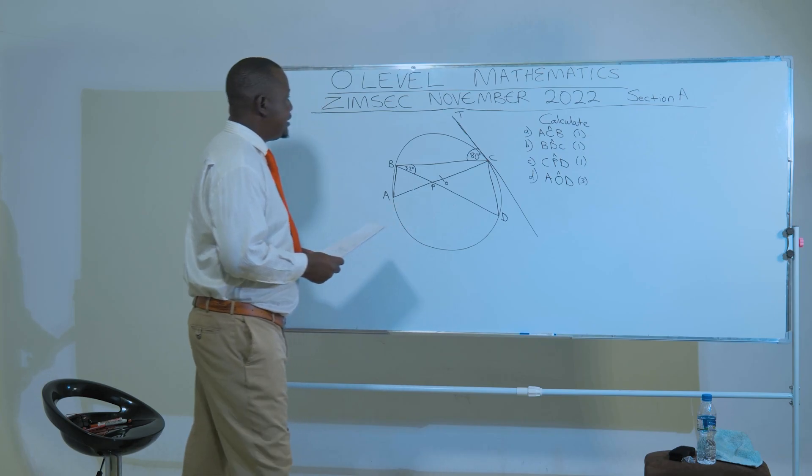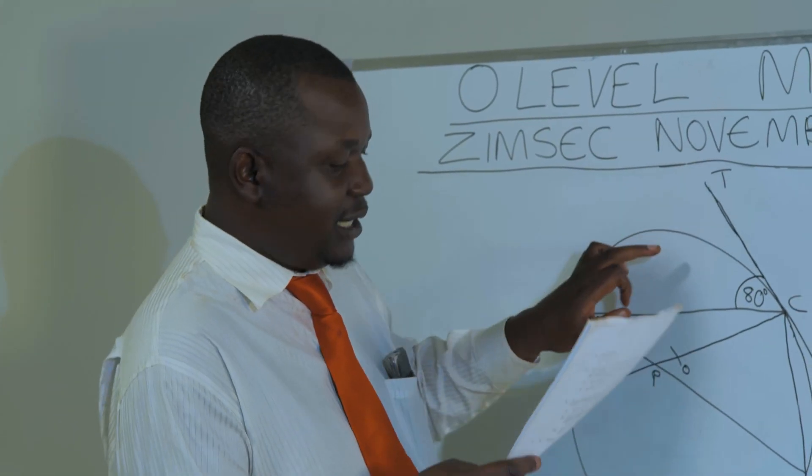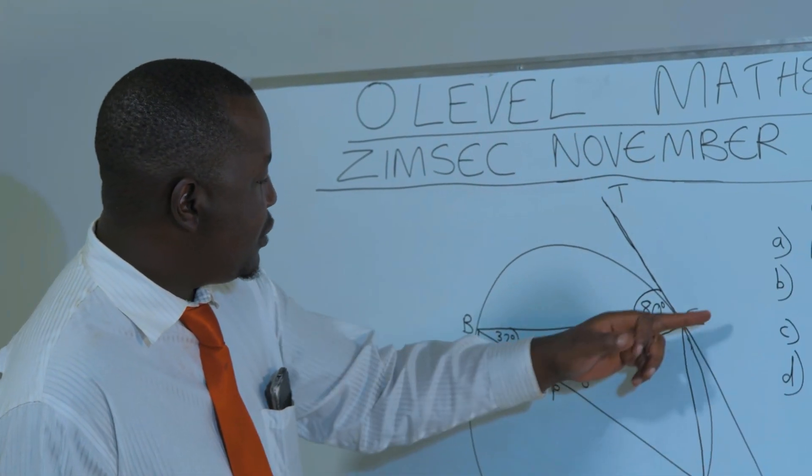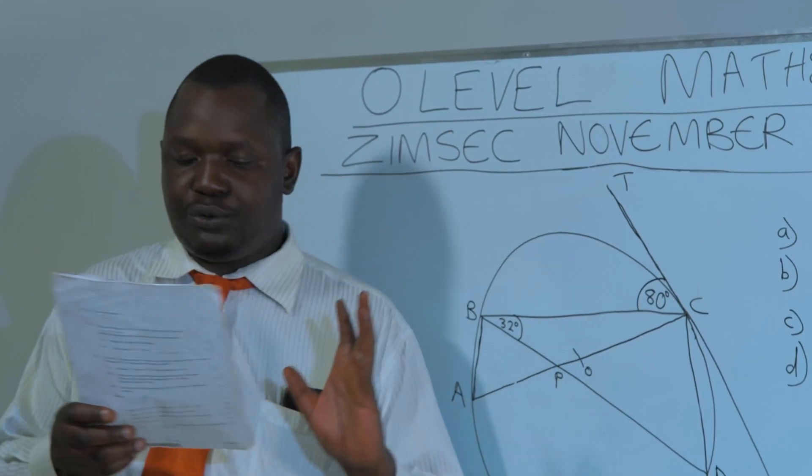We are also given that angle BCT is 80 degrees and angle CBD is 32 degrees.